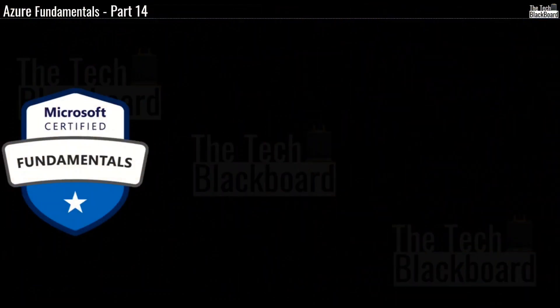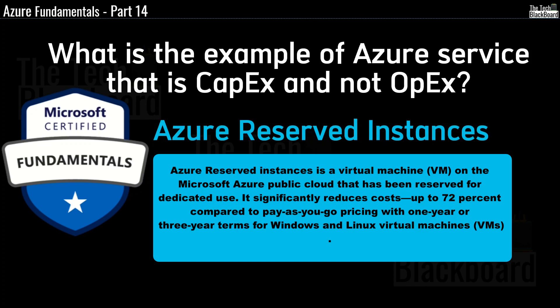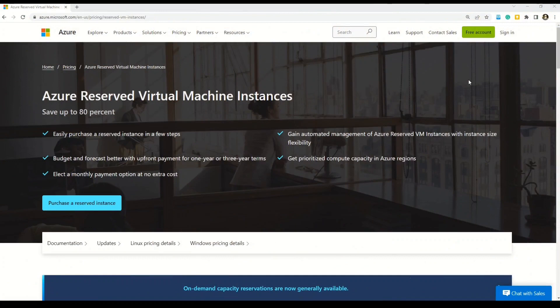Earlier in the video I asked: what is one Azure service that comes under CapEx and not OpEx? That service is Azure Reserved Instances. Azure Reserved Instances are virtual machines on Microsoft Azure's public cloud reserved for dedicated use, and they significantly reduce cost by up to 72% compared to pay-as-you-go pricing, with one-year or three-year terms for Windows and Linux virtual machines. The Microsoft documentation link is available in the description box and pinned comment.